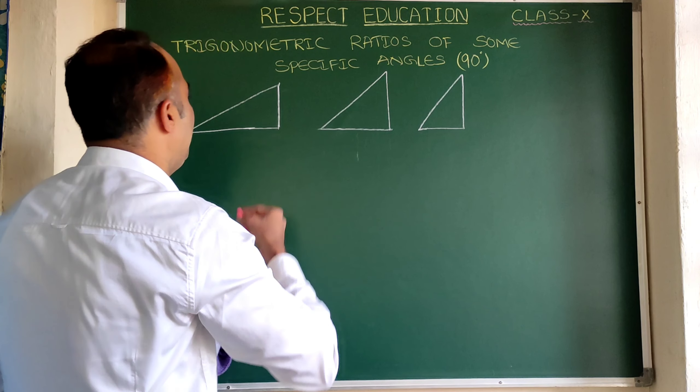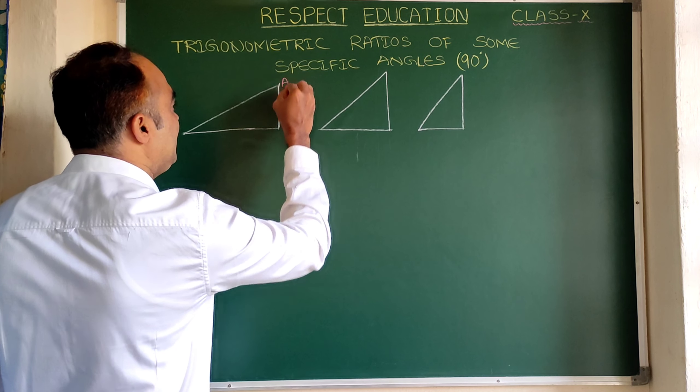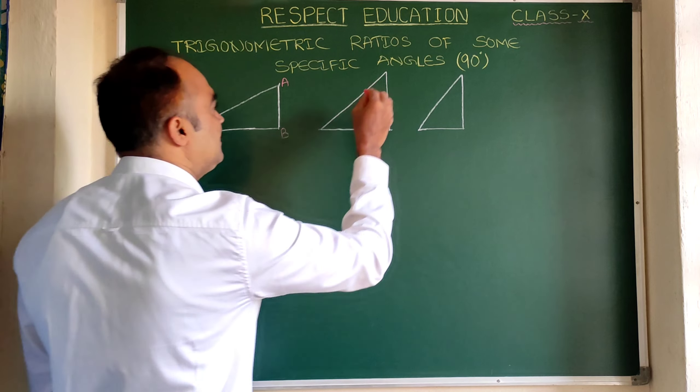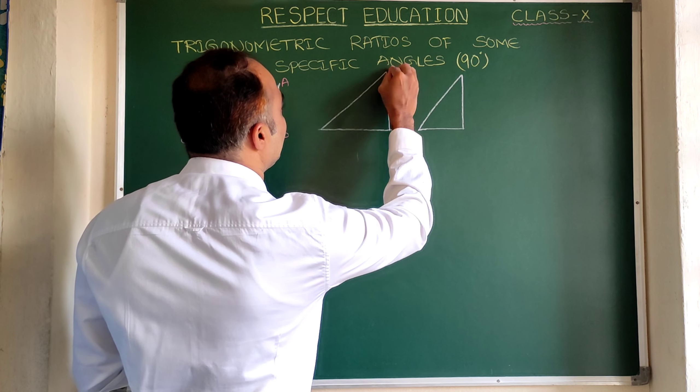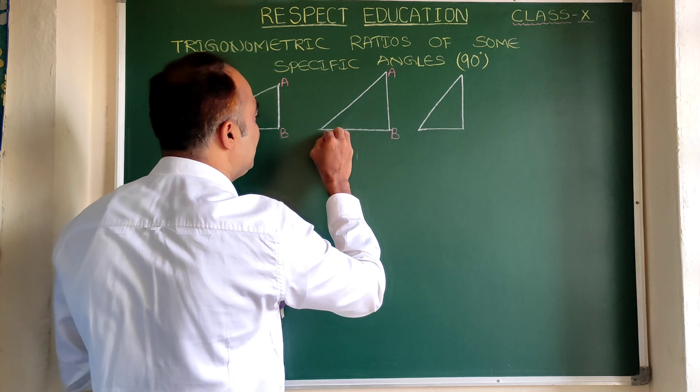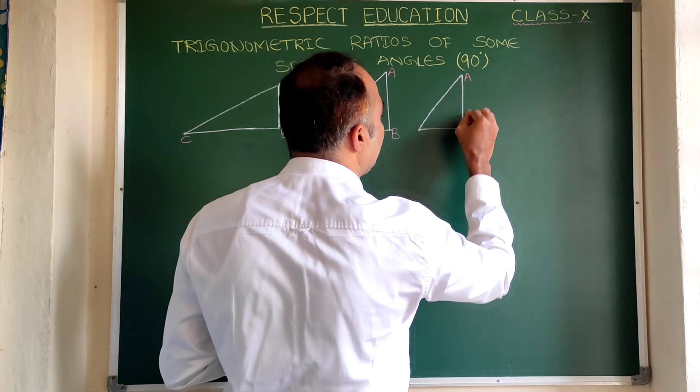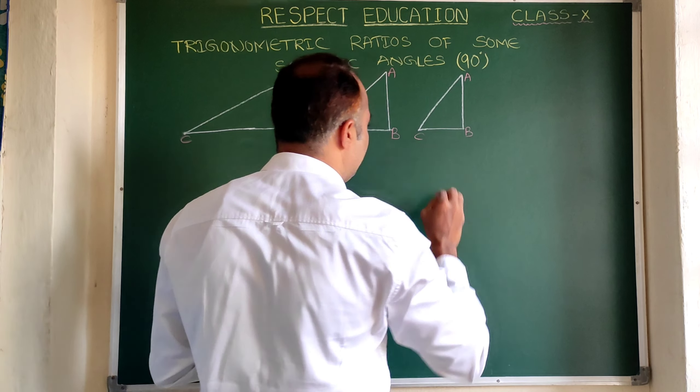So, let us label it as A, B, and C. Same here also: A, B, C. Here it is A, B, and C.